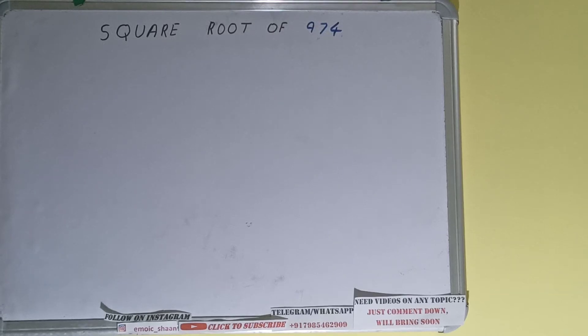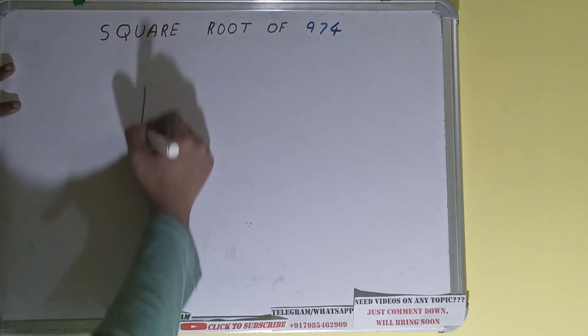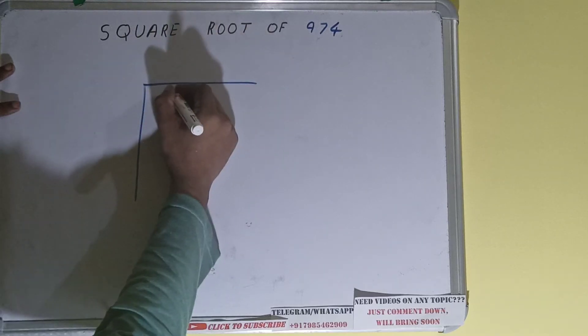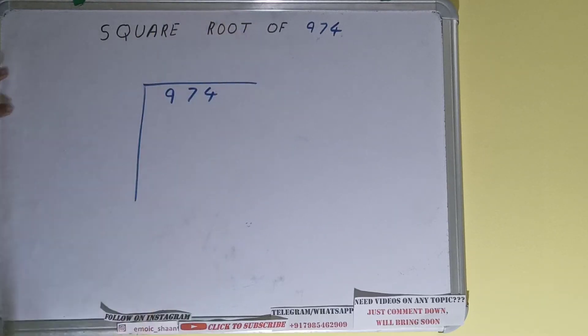Hello friends, in this video I'll be helping you with the square root of the number 974. So let's start. We'll be using the division method, so first we need to write the number like this.